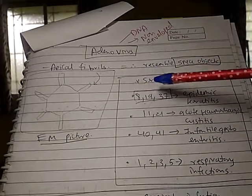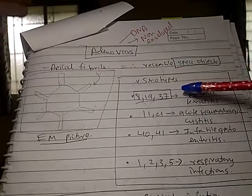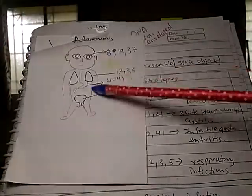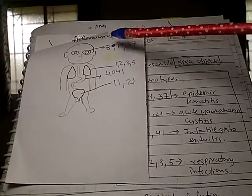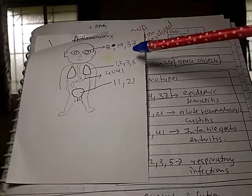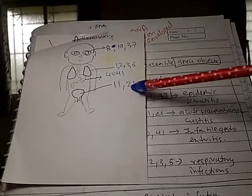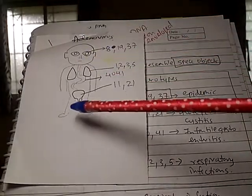Serotypes of adenovirus 8, 19, and 37 cause epidemic keratoconjunctivitis. Then serotypes 11 and 21 cause acute hemorrhagic cystitis.